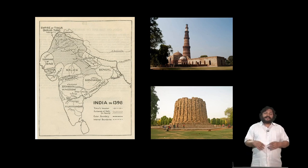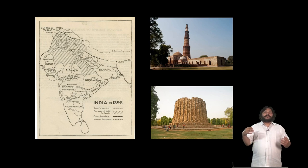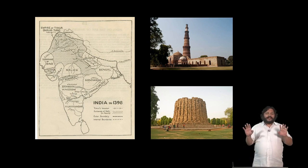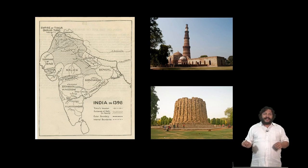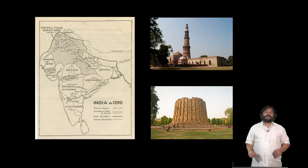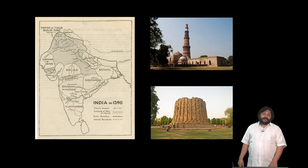The Delhi Sultanate would eventually be ruled by a number of dynasties, such as the Khiljis, the Tughlaqs, the Lodhis, the Syeds. And the last of them, the most famous — the Mughals — who also came initially as the sultans of Delhi.